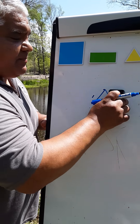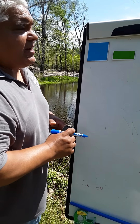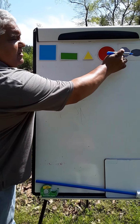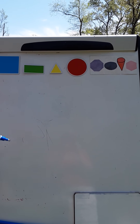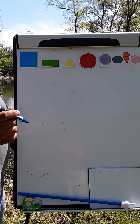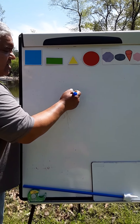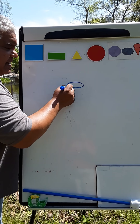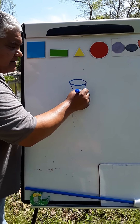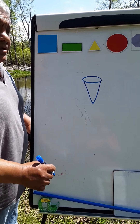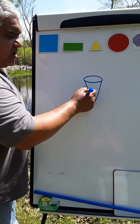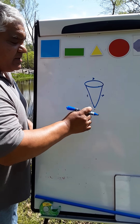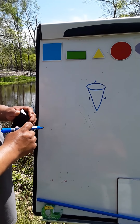The next shape we will cover is a cone. We're not going to cover the octagon and hexagon because that's a higher grade level, but it's good to know. A cone has one side on the top and two sides on the bottom, so technically a cone has one, two, and three sides with one vertex.